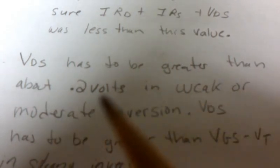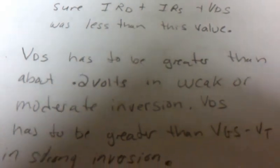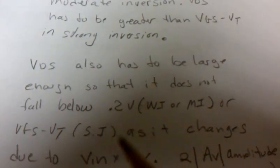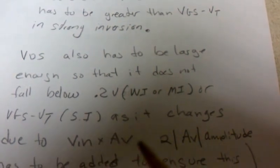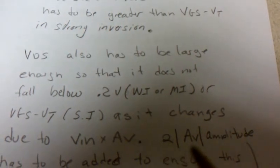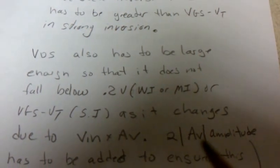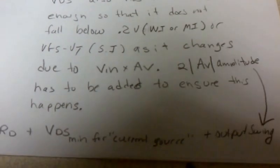Now what about VDS? VDS has to be greater than about 0.2 volts in weak or moderate inversion, and VDS has to be greater than VGS minus VT in strong inversion. VDS also has to be large enough so that it does not fall below these two values—0.2 volts in weak or moderate inversion, or VGS minus VT in strong inversion—as it changes due to the input voltage times the gain. This change can be seen by 2 times the absolute value of the gain times the amplitude of the input signal, and you have to add that to make sure that